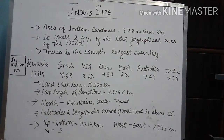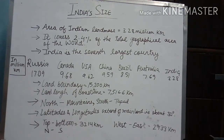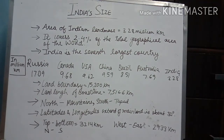Because of the large east-to-west extent of India, there is a 2-hour time lag from Gujarat in the west to Arunachal Pradesh in the east. This means the sun rises 2 hours earlier in Arunachal Pradesh compared to Gujarat, but India still follows one single standard time.